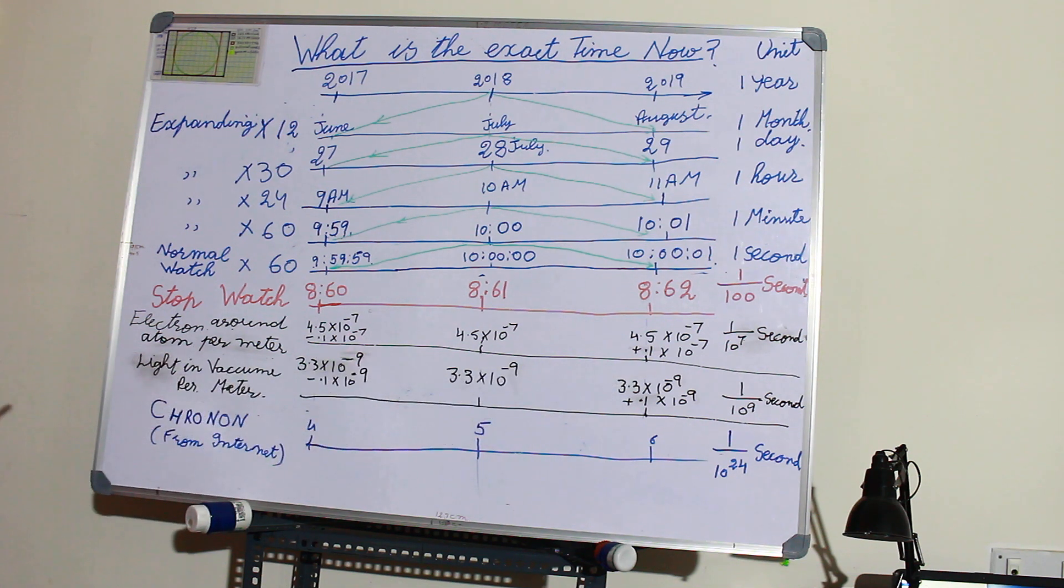take to cover a length of a few meters. The last one is chromo, which is the hypothesized quantum unit of time.